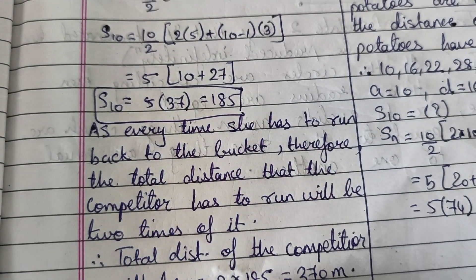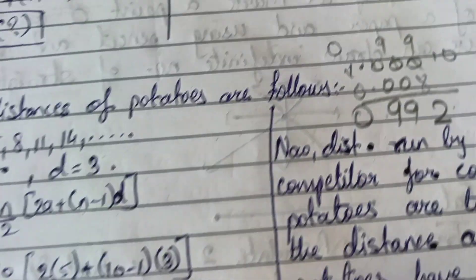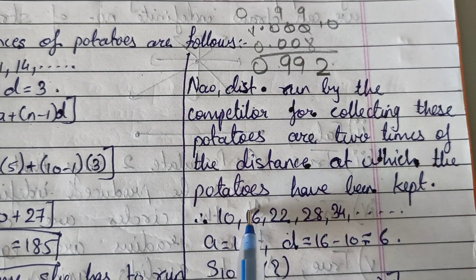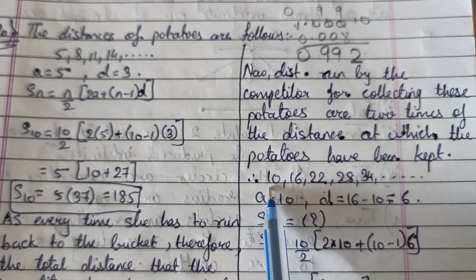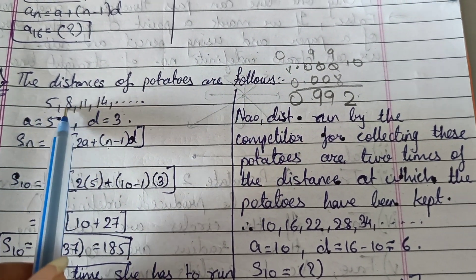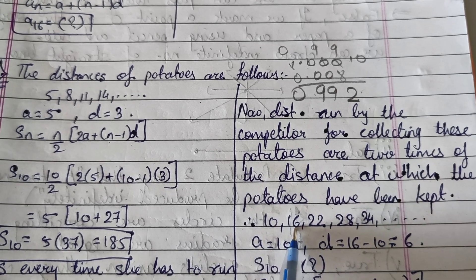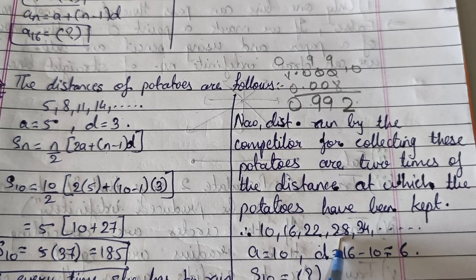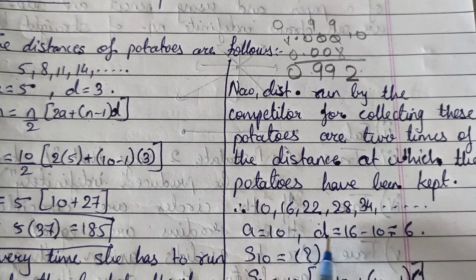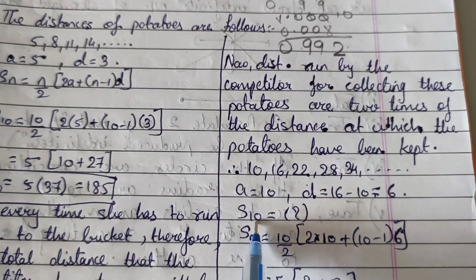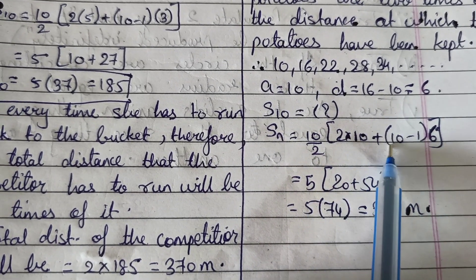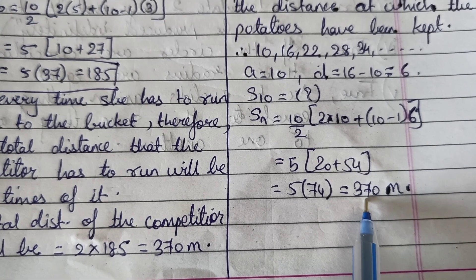Since the competitor must run back to the bucket each time, the total distance is 2 × S10 = 2 × 185 = 370 m. Alternatively, since every trip is doubled, the doubled distances form the AP: 10, 16, 22, 28, 34, ... with A = 10, D = 6. S10 = 10/2 × (2×10 + 9×6) = 5 × (20 + 54) = 5 × 74 = 370 m.